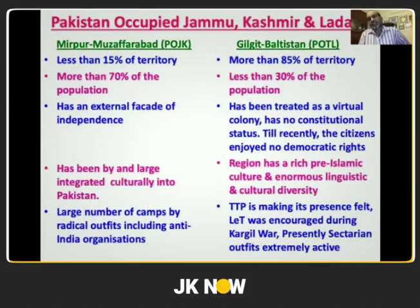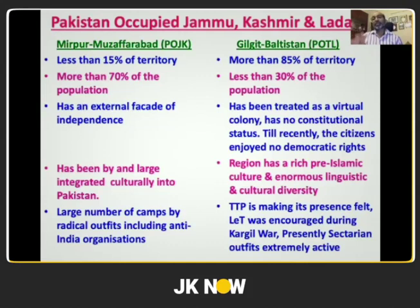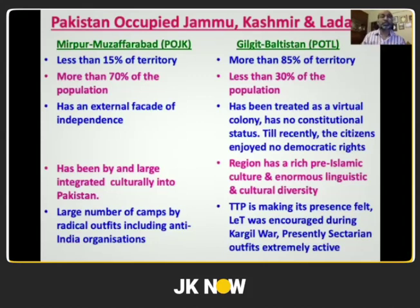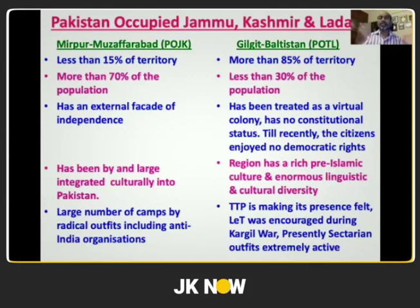Pakistan-Occupied Jammu and Kashmir and Ladakh has been divided into two parts. One is Mirpur-Muzaffarabad, or Pakistan-Occupied Jammu and Kashmir, and the other is Gilgit-Baltistan, or Pakistan-Occupied Territory of Ladakh. Mirpur-Muzaffarabad is less than 15% of the territory under Pakistan's occupation, whereas Gilgit-Baltistan is more than 85%. Pakistan tries to project Mirpur-Muzaffarabad as an independent sovereign entity, calling it AJK — Azad Jammu and Kashmir.